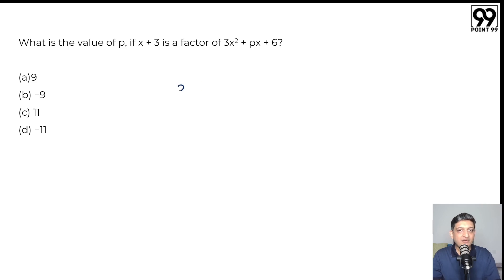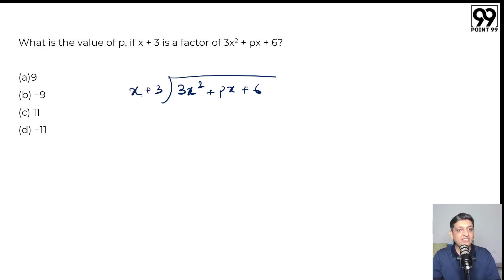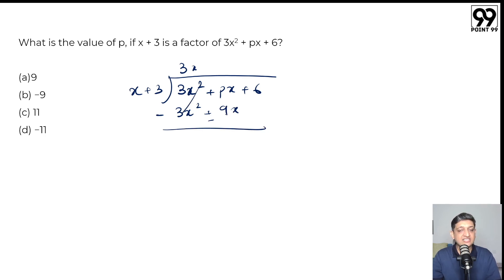There is one way of doing it using long division. So dividing 3x² plus px plus 6 by x plus 3: first I multiply by 3x to get 3x² here, but I also get 3x into 3, that is 9x. So I get 3x² plus 9x. Because I am subtracting, these cancel out and I get p minus 9 times x, plus 6 remaining.